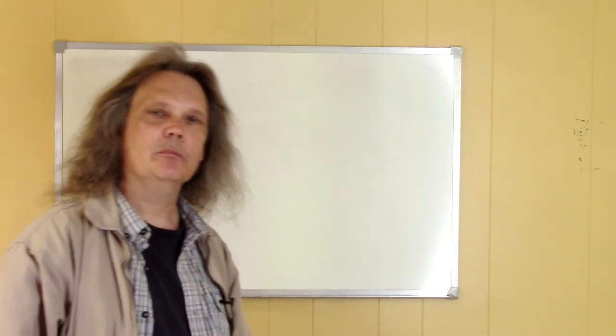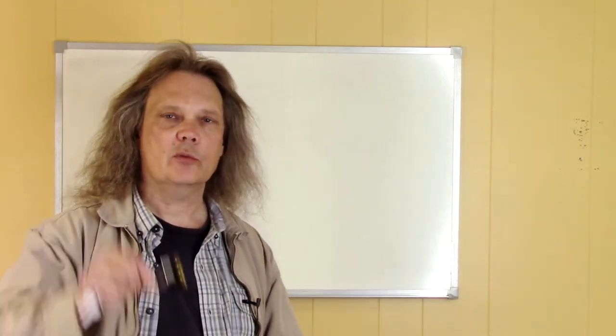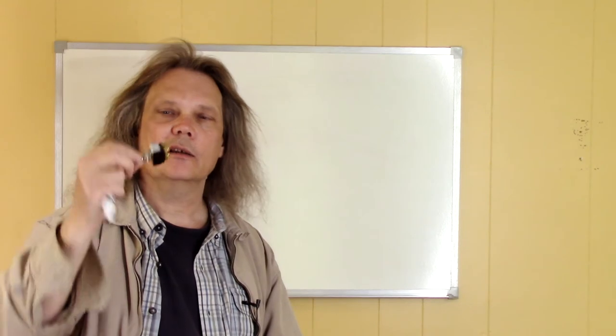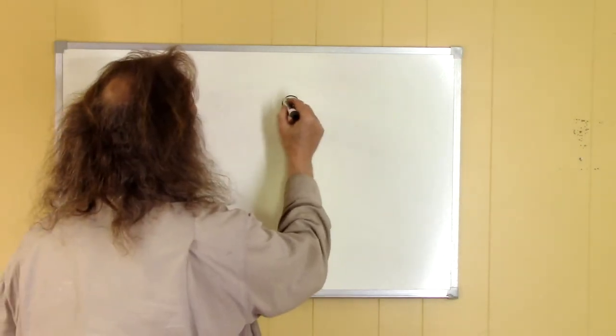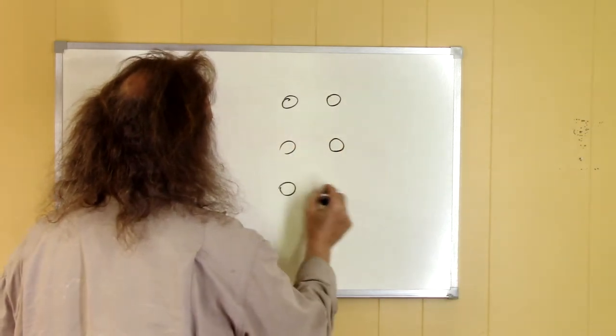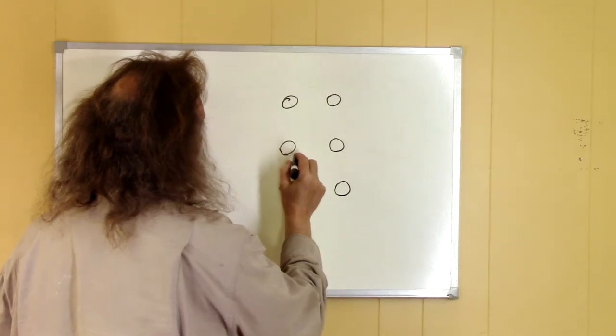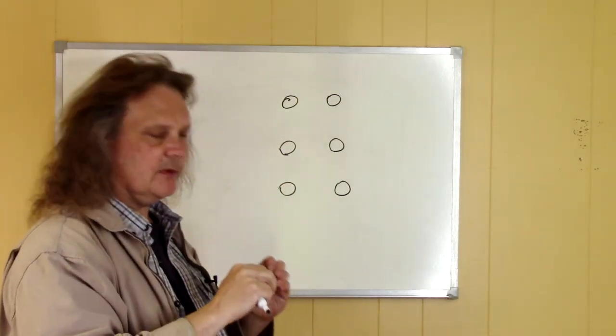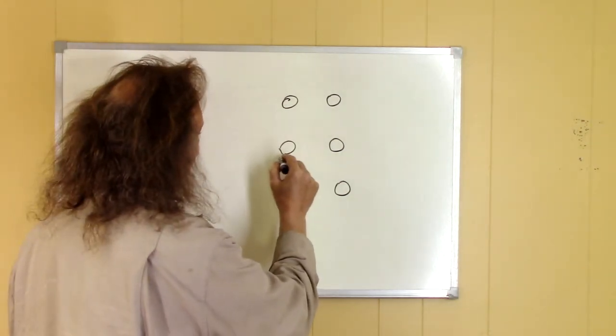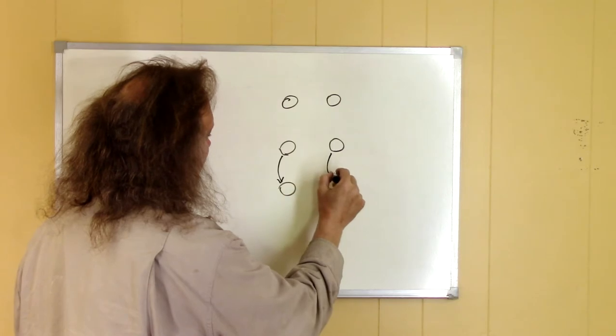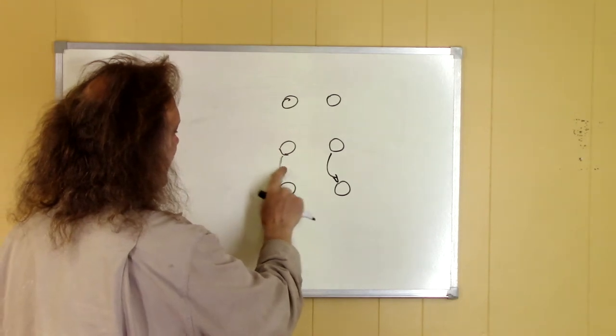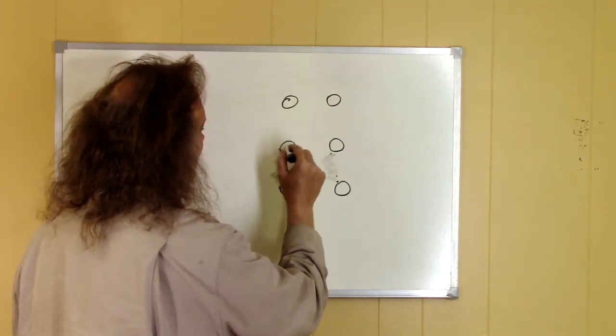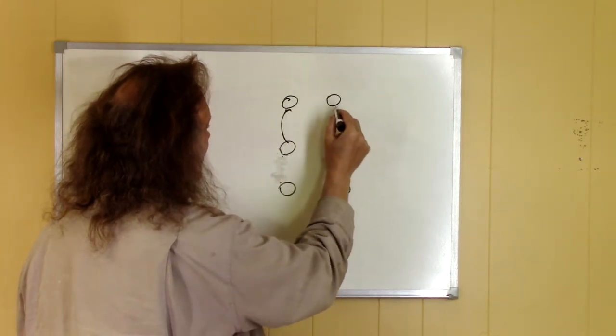The first method is we can have complete manual control using a switch like this which is a double pole double throw switch. And on the back side of this switch you'll see that there are six contacts. And the switch is set up so that when you flip it in one direction these center contacts will make connection with these terminals. And if you flip it the other direction that will get broken and those center contacts will then connect up to the top terminals like so.